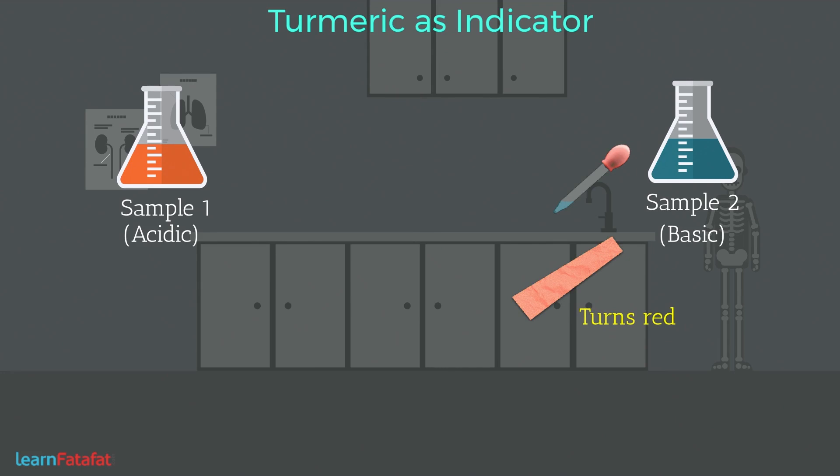Now if we put a drop of acidic solution on the strip, then there will be no change. However, if we use the used red strip for testing, then it turns back yellow again.